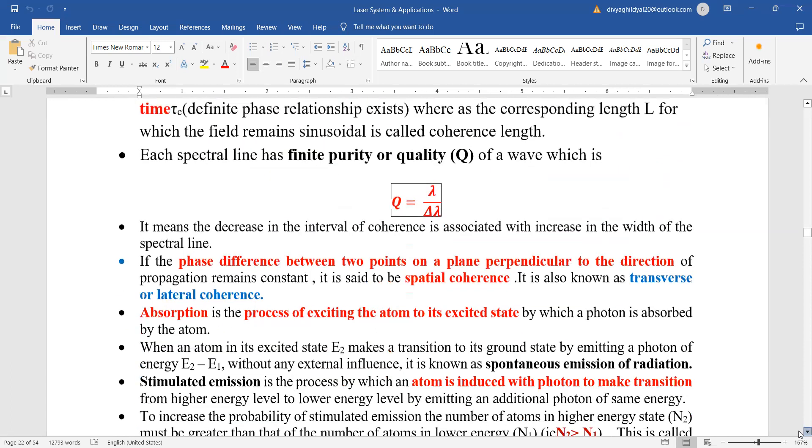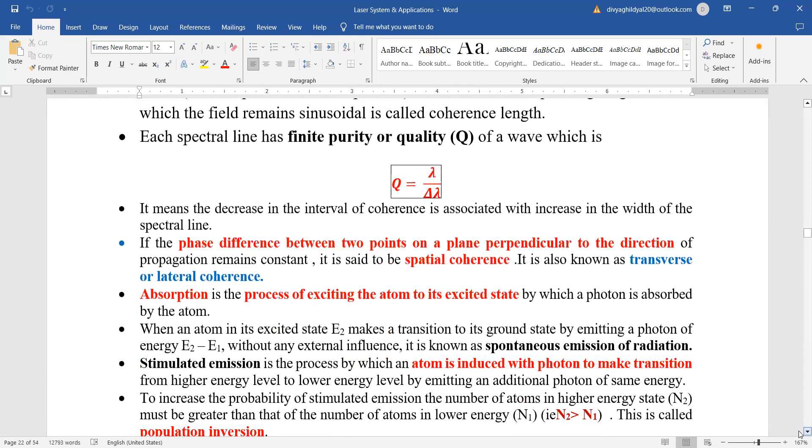Each spectral line has a finite purity or quality of a wave which is given by Q equals lambda upon del lambda. Spatial coherence is also known as transverse coherence.